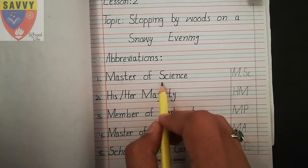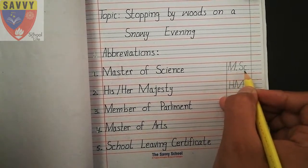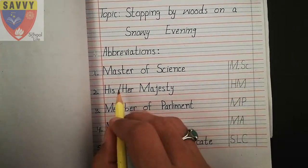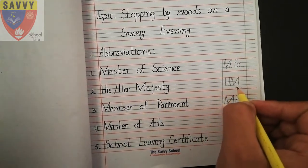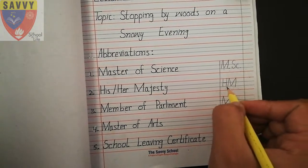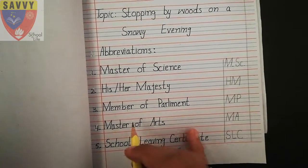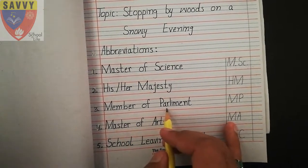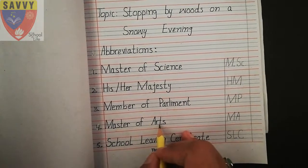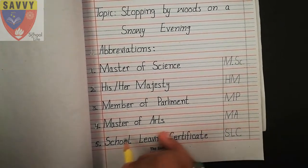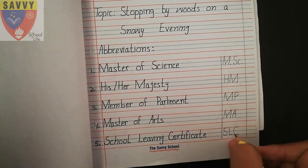The first one is Master of Science (MS). Next is His or Her Magistrate (HM). Next is Member of Parliament (MP). Next is Master of Arts (MA).